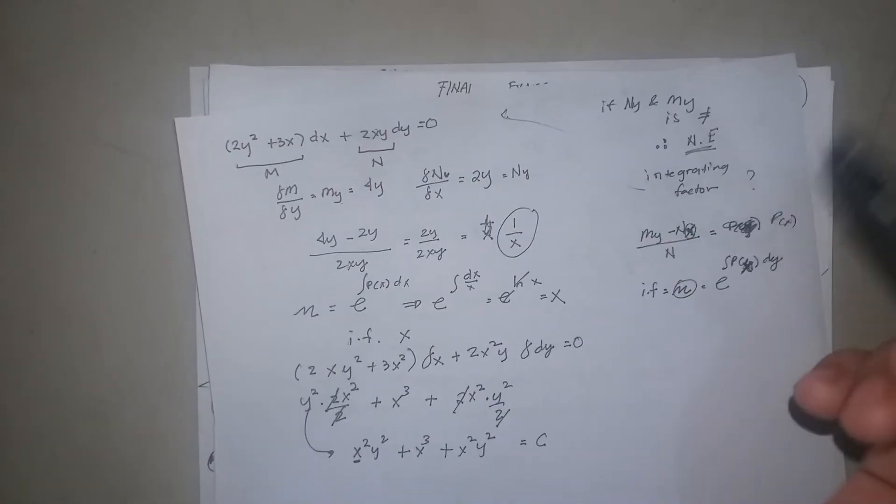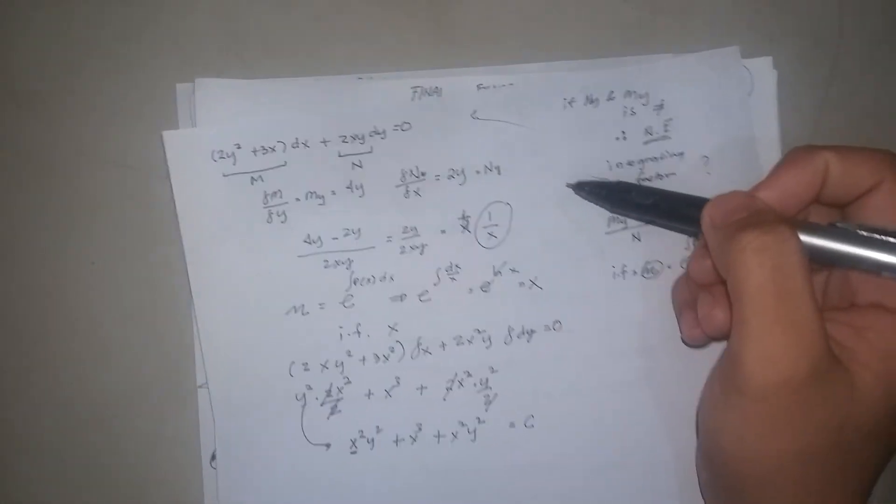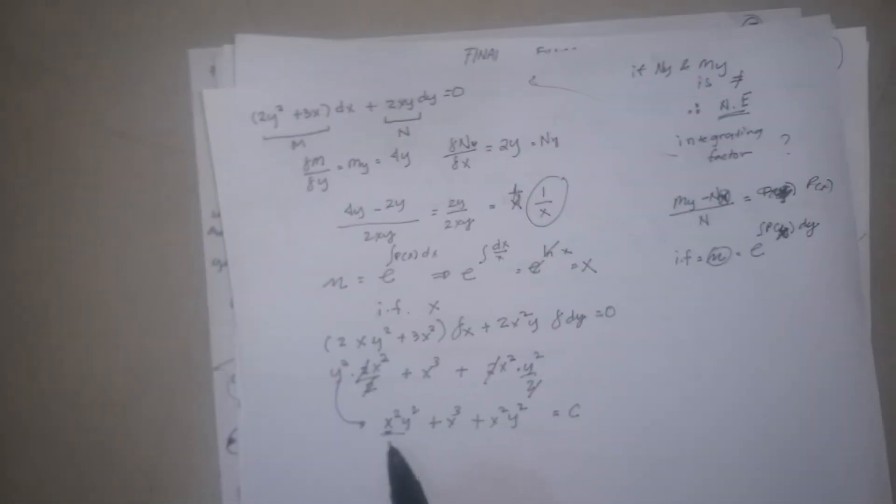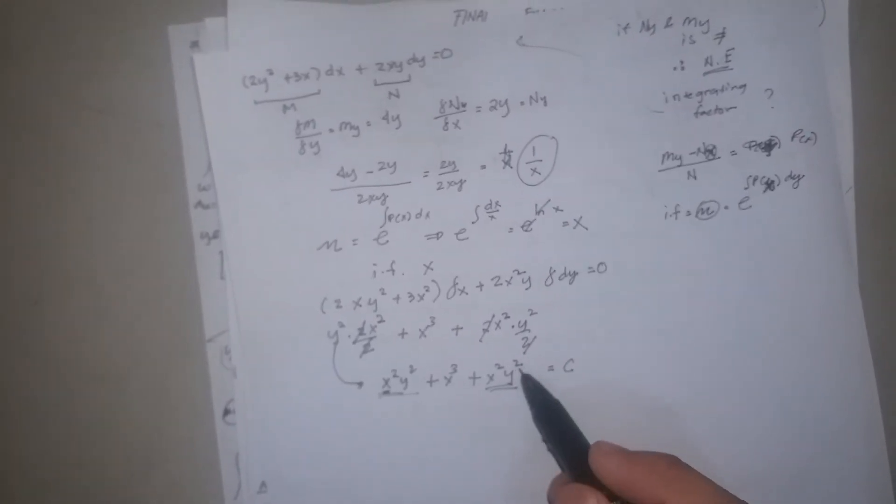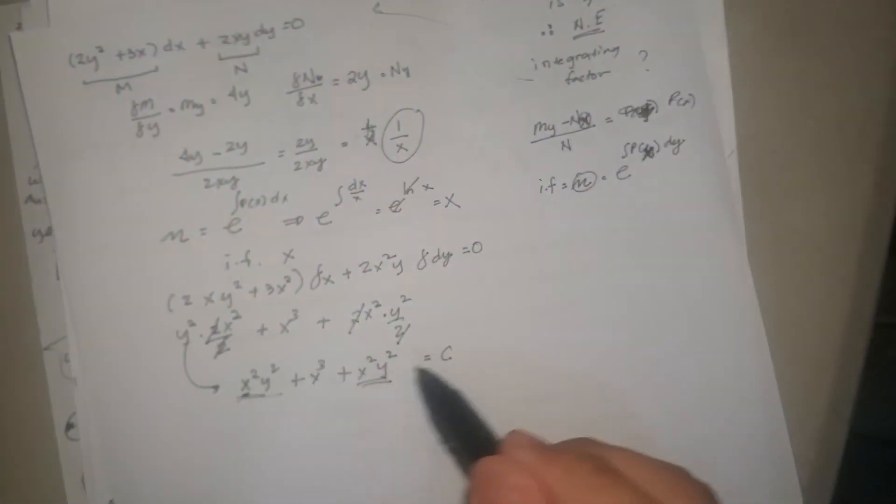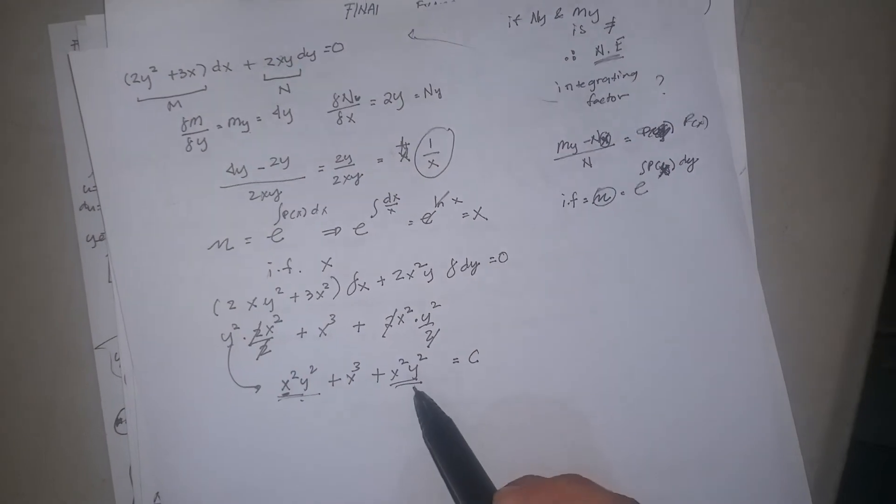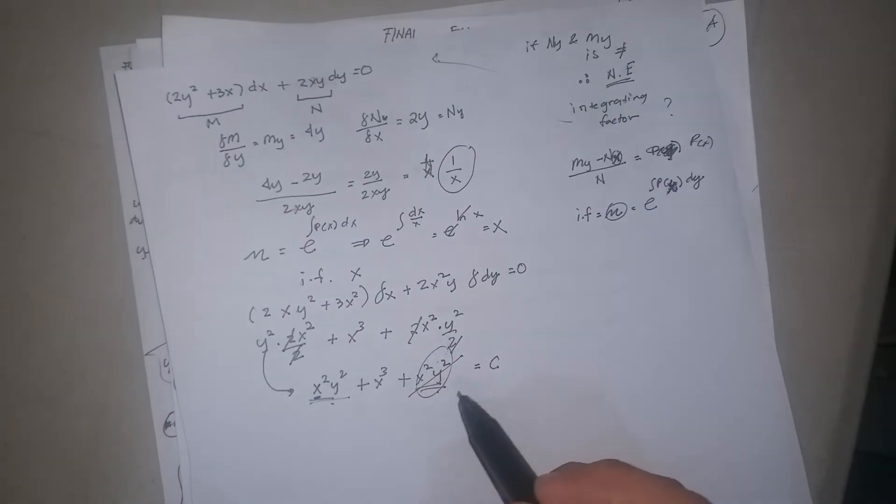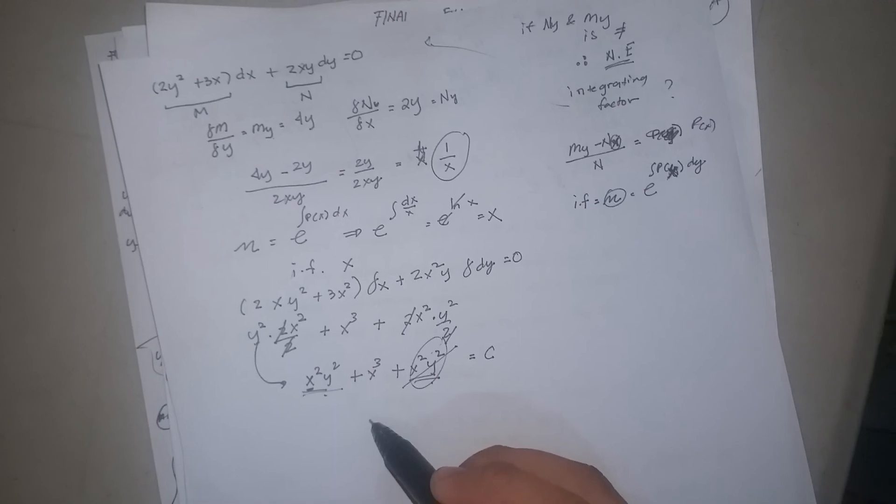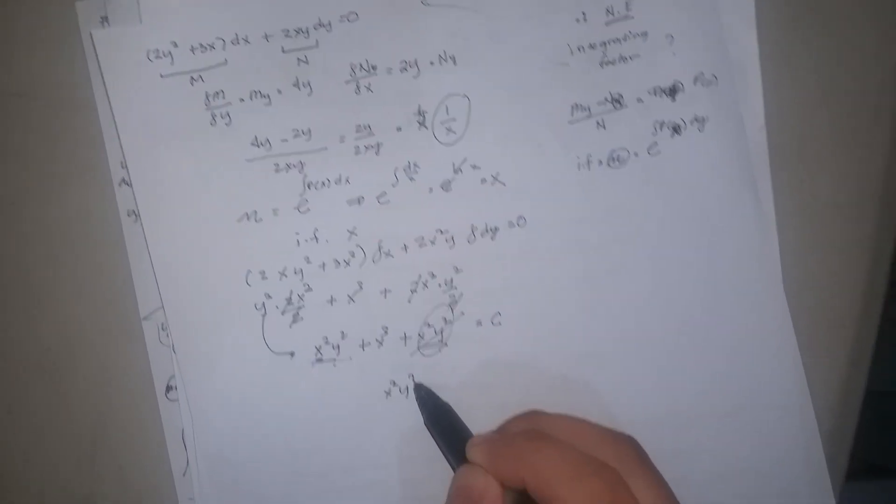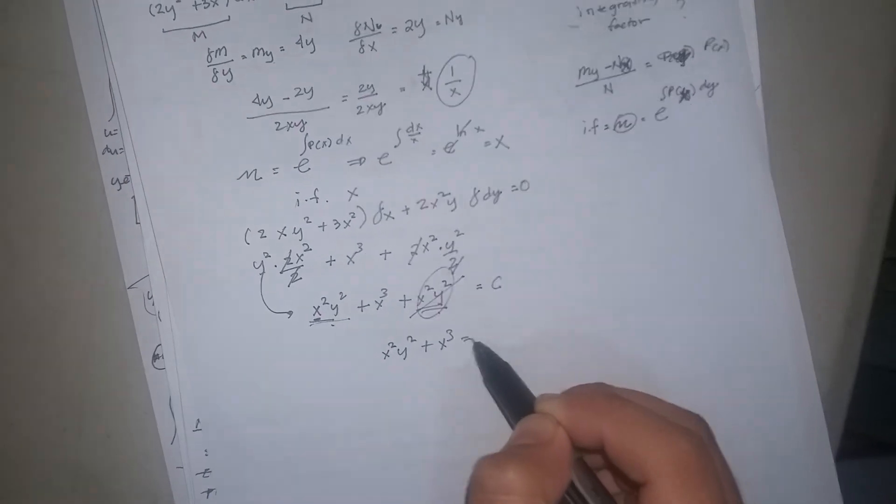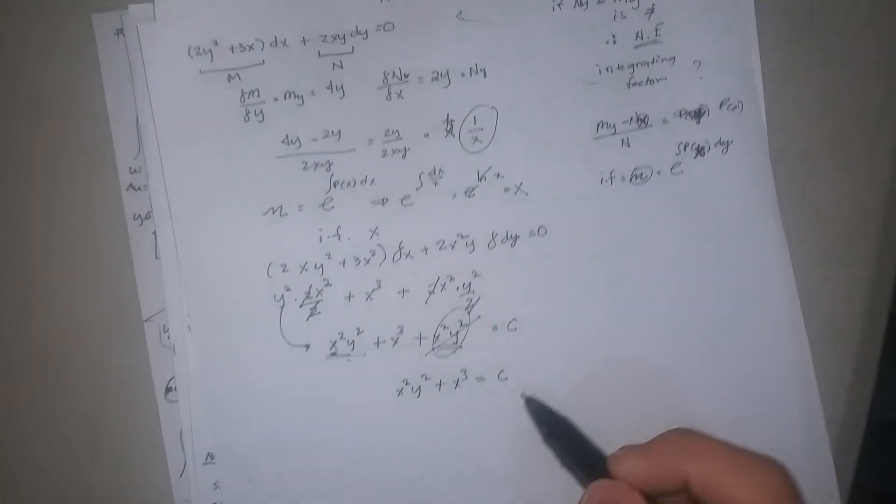Note that if you do this method, if you get the similar terms, you just get the one. You have to exclude the other one. So if they are the same, exclude this one because it's the rule here in this method. Therefore, the answer is x squared y squared plus x cubed equals C. Thanks for watching.